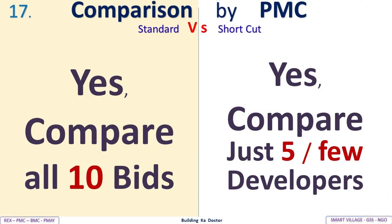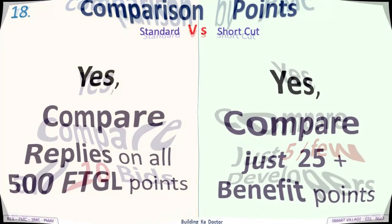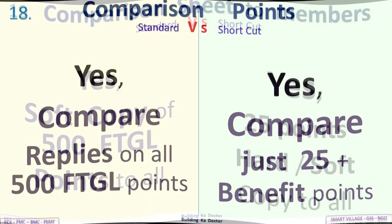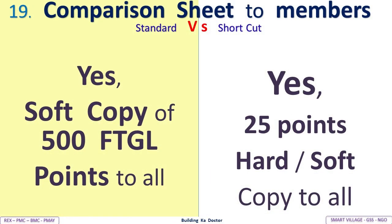PMC comparison: Standard compares all 10 bids; shortcut compares only five or fewer developers. Comparison points: Standard compares replies on all 500 FTGL points; shortcut compares just 25-plus benefit points. Comparison sheet to members: Standard provides soft copy of all 500 FTGL points to all members; shortcut provides only 25 points, hard or soft copy.